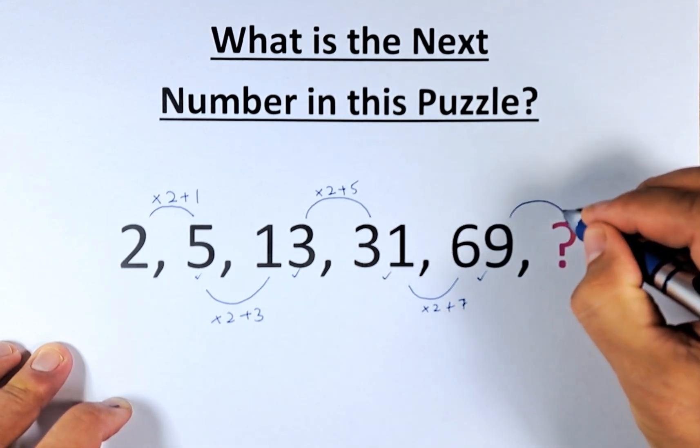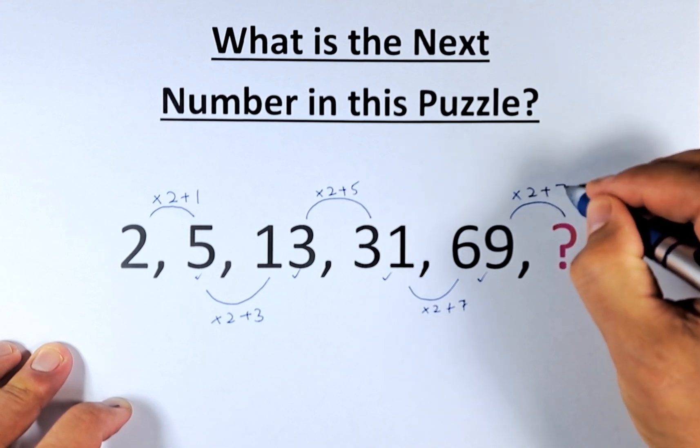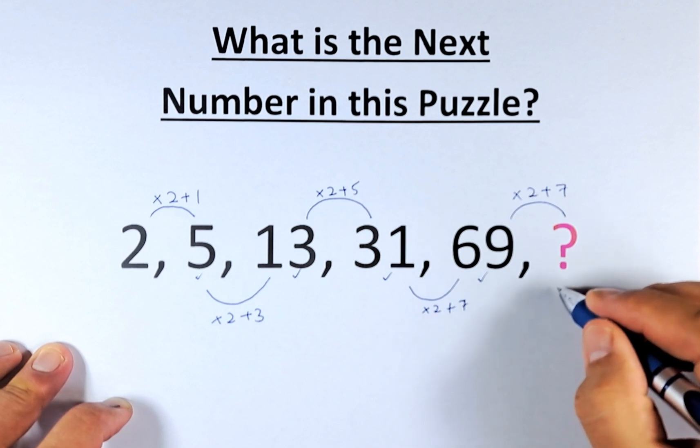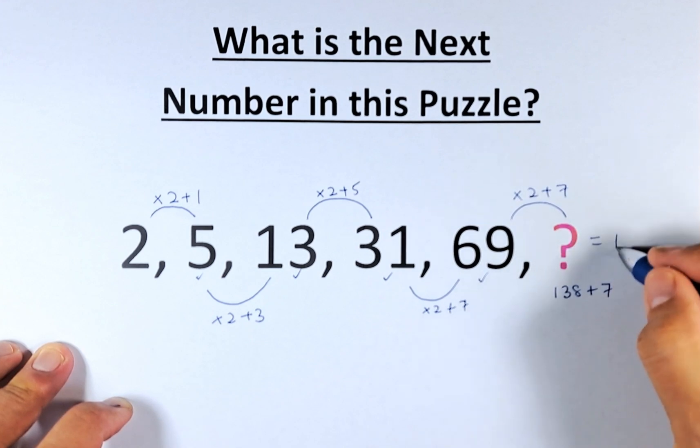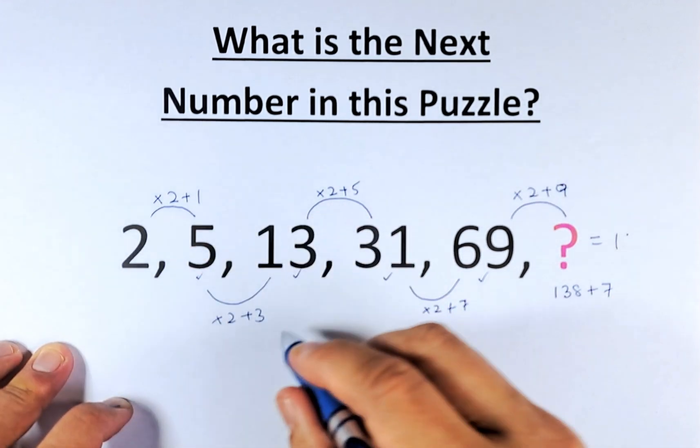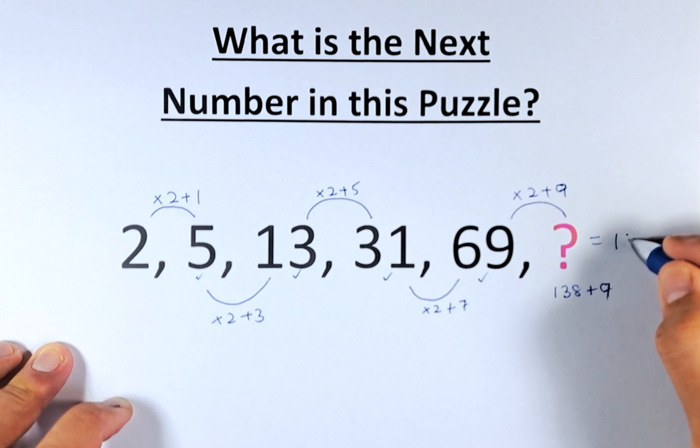So what is 69 to the question mark? We're going to multiply by 2 and we're going to add 9. 69 multiplied by 2 is going to be 138 and we're going to add 9. So 1, 3, 5, 7, 9 and 138 plus 9 and the answer is going to be 147.